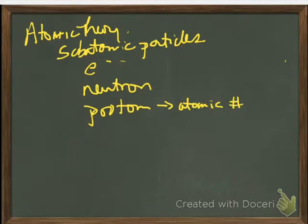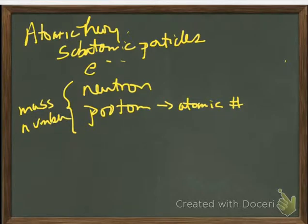Okay, remember that the proton is the atomic number that is on the periodic table. The proton plus the neutron is known as the mass number, and this is not on the periodic table. This is something that is specific to an isotope, and we'll get to isotopes in just a moment.